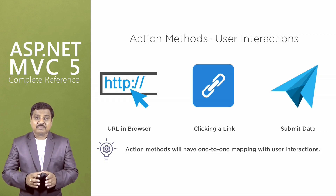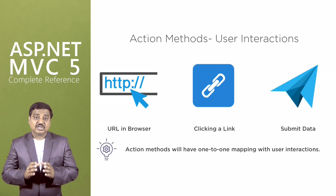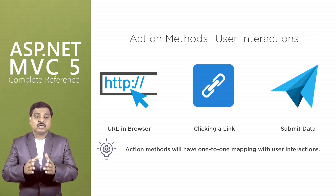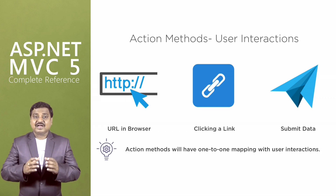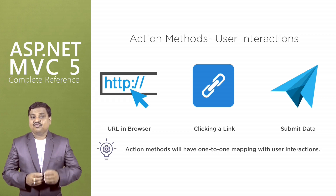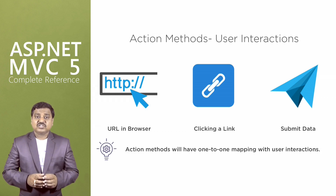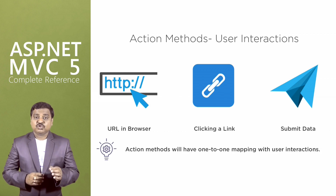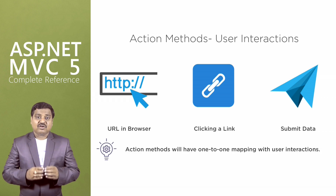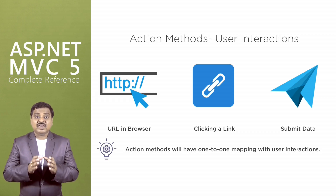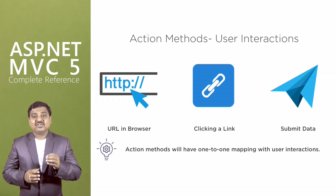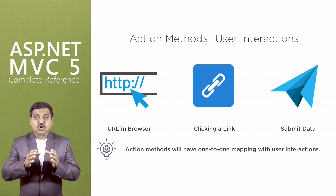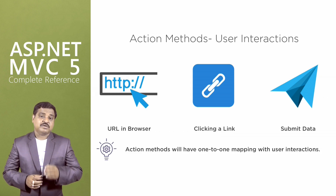Action methods typically have a one-to-one mapping with user interactions. For example, user interaction includes entering a URL in the browser, clicking a link, and submitting data from a form. Each of these user interactions causes a request to be sent to the server. In each case, the URL of the request includes information that the MVC framework uses to invoke an action method.